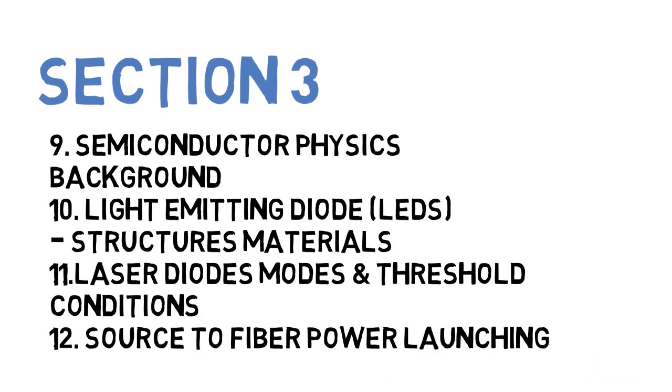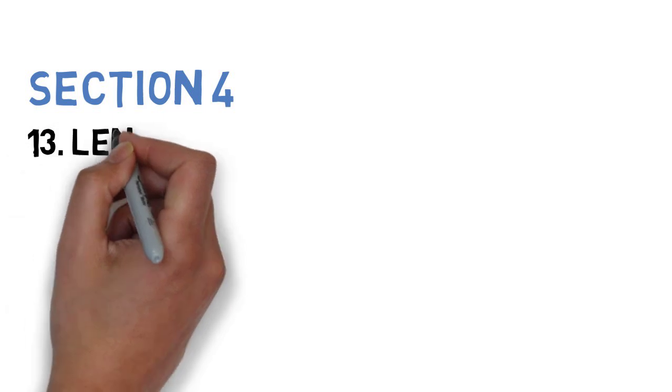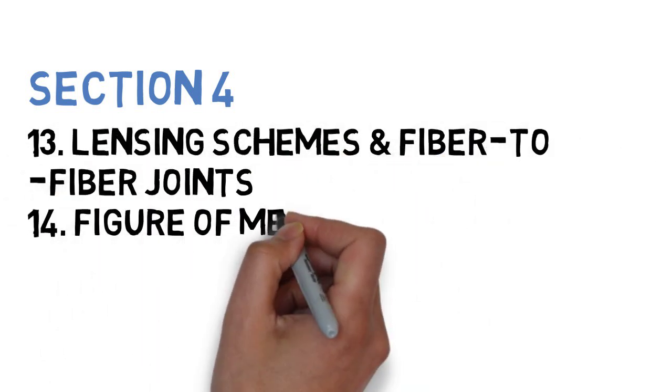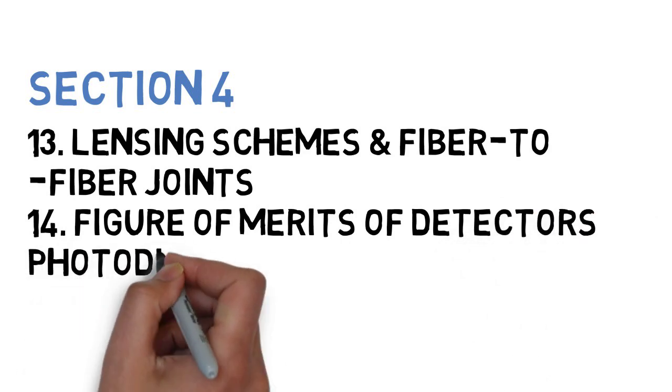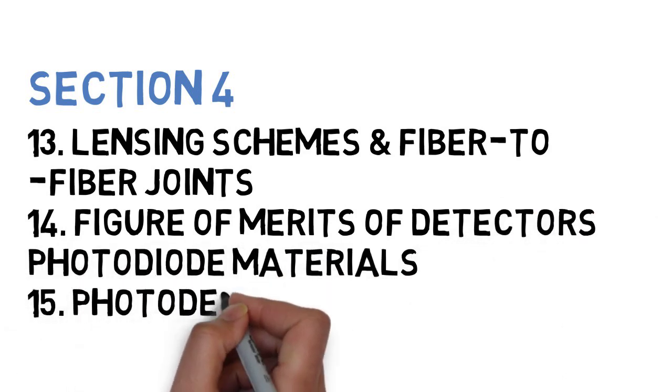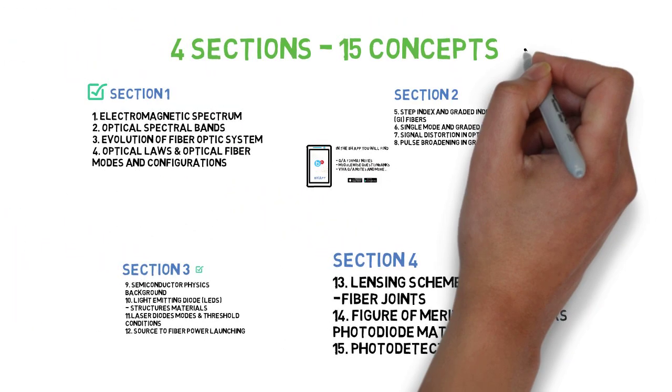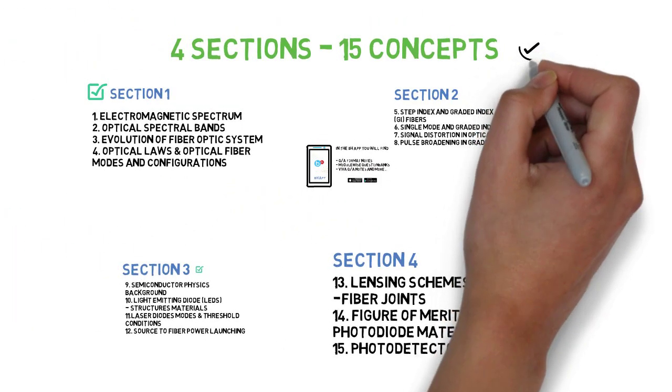These four questions you have to do for section three. Let's check section four, wherein the first is lensing schemes and fiber to fiber joints, next is figure of merits of detectors, photodiode materials, and the last one is photodetector noise.